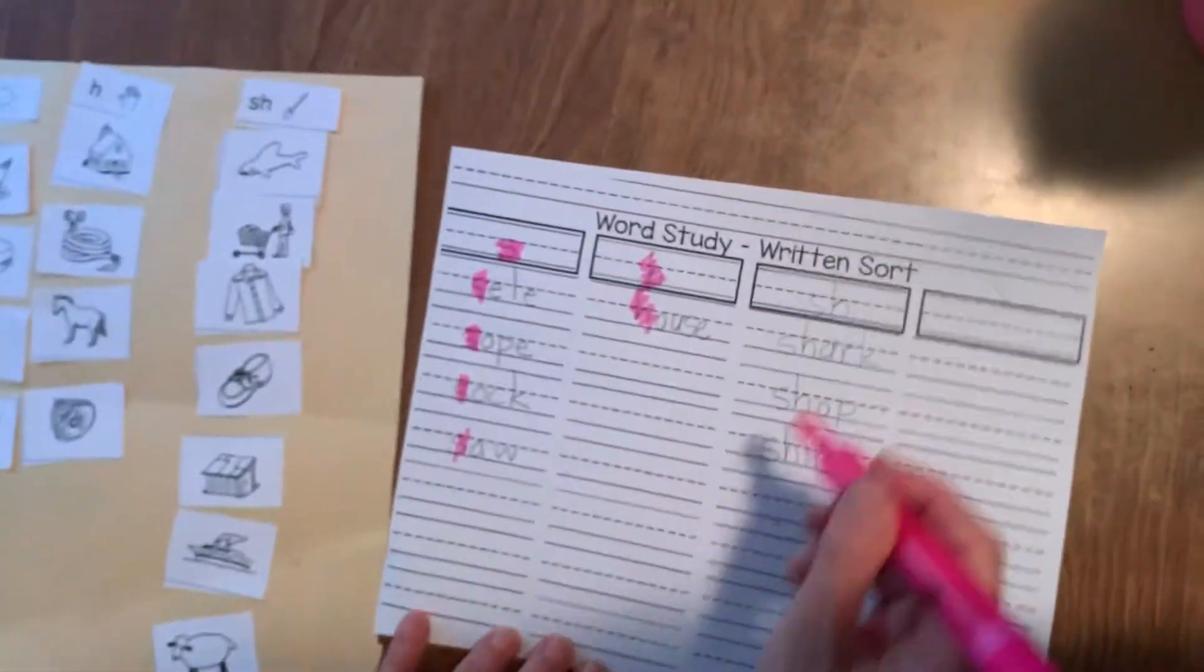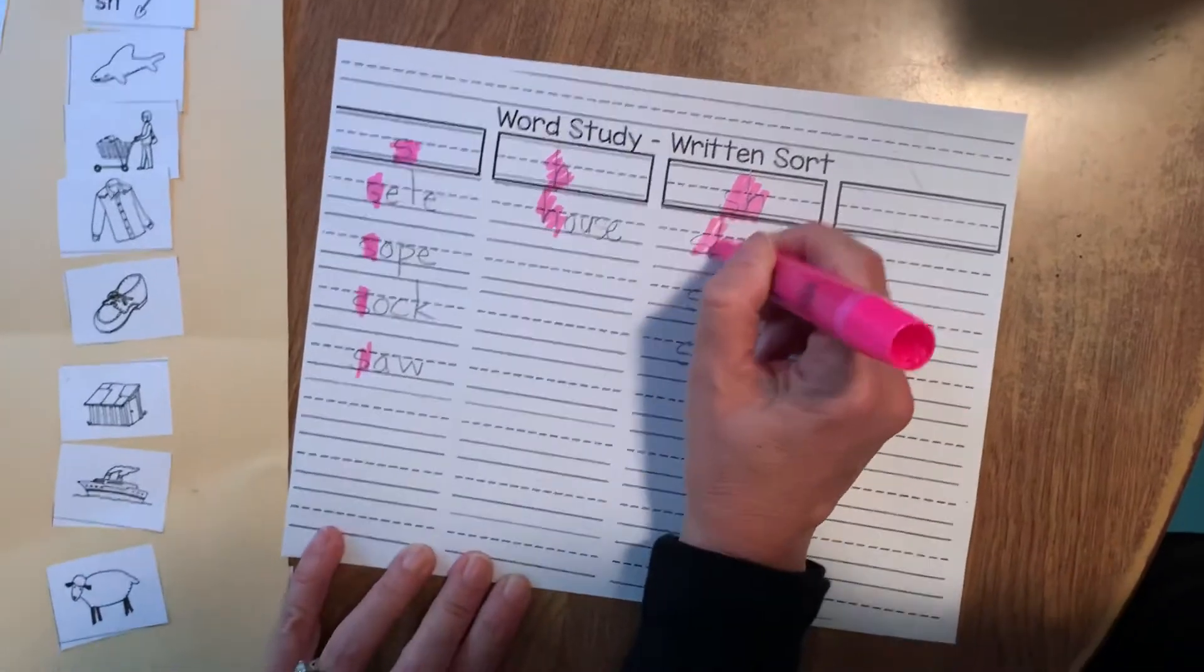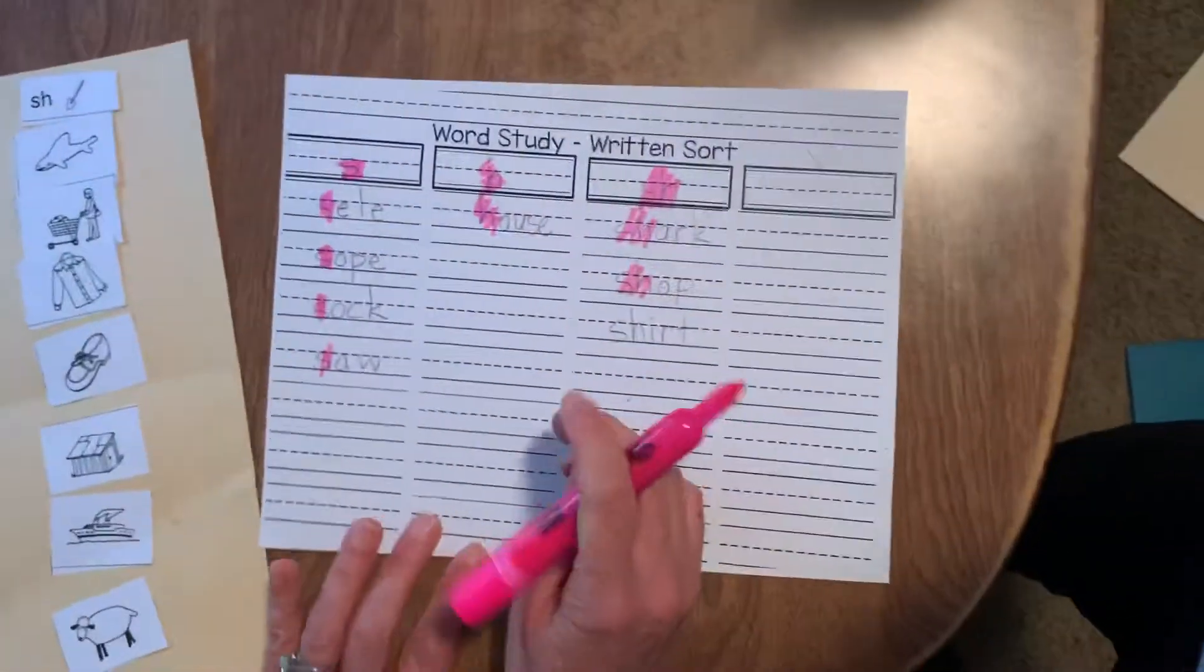Here they're going to highlight all the H sound at the beginning of the words. House, hose, horse, ham. And lastly, SH. Shark, shop, and so on and so forth.